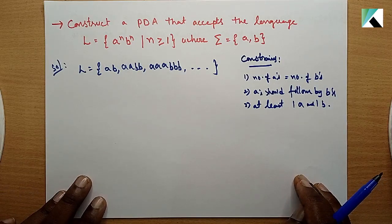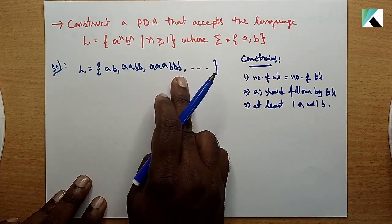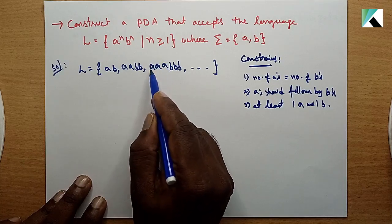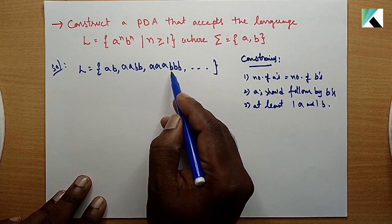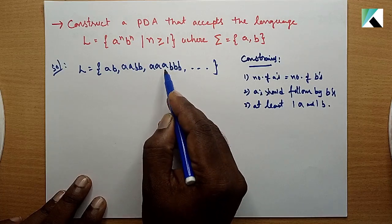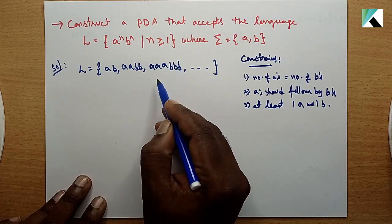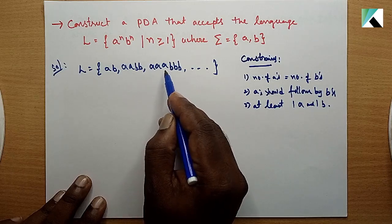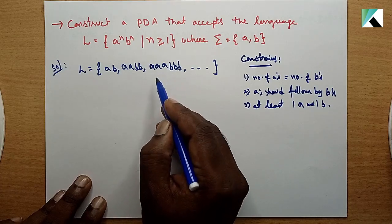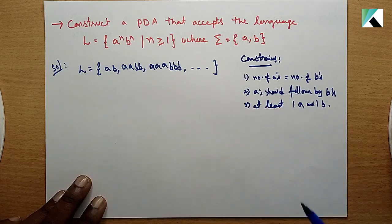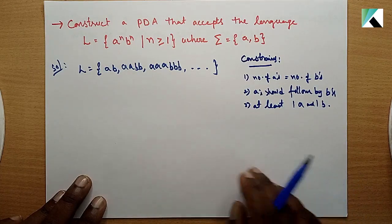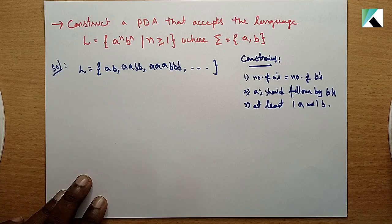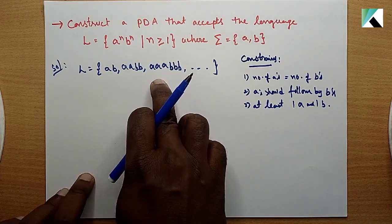So the logic is: we analyze a string. For example, AAABBB where n=3. When we push A's into the stack, and then for each B we perform a pop operation. So the number of B's will pop the same number of A's pushed. Finally, the stack is back to initial, and the given string is accepted by the PDA.